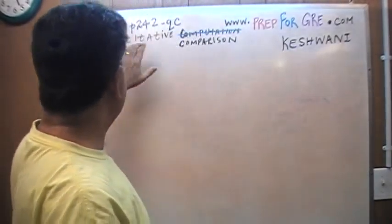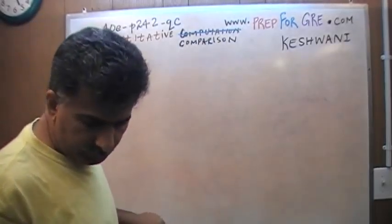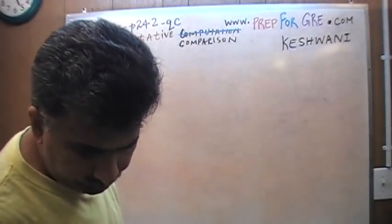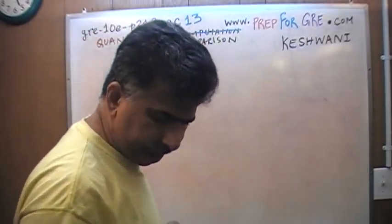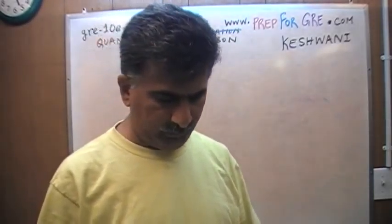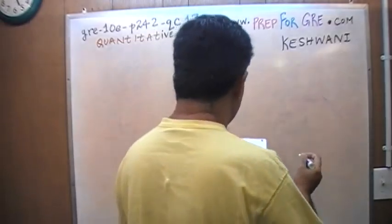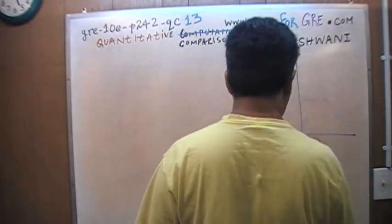I have been solving math problems for GRE out of this book here, practicing to take the GRE general test, the 10th edition. If you do not own this book already, purchase it immediately. The problem that I'm about to solve is on page 242, quantitative comparison question number 13.